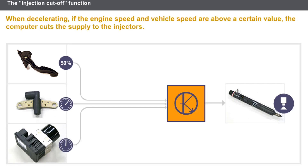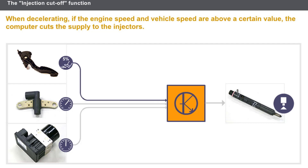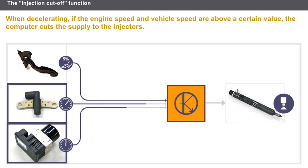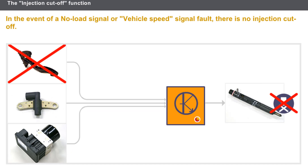When the no-load signal is present and the engine speed and vehicle speed are above a certain value, the computer translates this as an engine braking request and cuts the supply to the injectors. If the engine speed or vehicle speed falls below a threshold value, injection is restored to maintain an idling speed. In the event of a no-load signal fault, there is no injection cut-off. A vehicle speed signal fault will also stop the injection cut-off function.